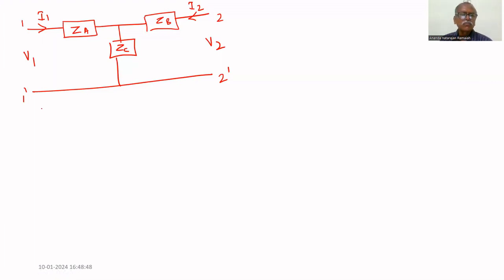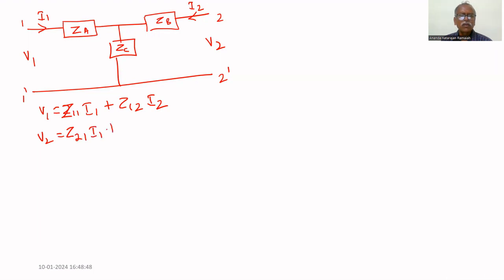First, let us assume that v1 = z11·i1 + z12·i2 and v2 = z21·i1 + z22·i2.